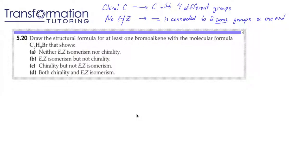Draw the structural formula for at least one bromoalkene with the molecular formula C5H9Br that shows A: Neither EZ isomerism nor chirality. In order for us to do this question, we first need to figure out how to show a molecule that exhibits no chirality and no EZ isomerism.